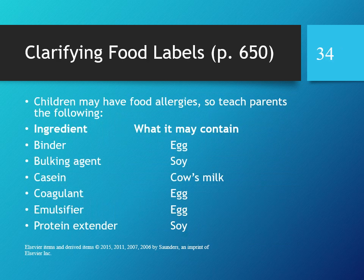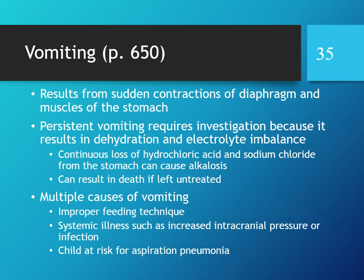When clarifying food labels for children with food allergies or intolerances: 'binder' may indicate egg; 'bulking agent' may indicate soy; 'casein' means cow's milk; 'coagulant' or 'emulsifier' may indicate egg; and 'protein extender' may indicate soy. Parents need to understand these hidden ingredient names to avoid allergens.